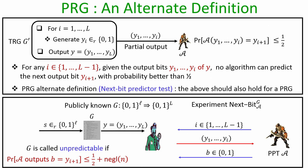It turns out we can prove that if any algorithm G is unpredictable as per the next-bit prediction definition, then it also satisfies the indistinguishability-based definition of PRG that we saw previously. I hope you enjoyed this lecture. Thank you.